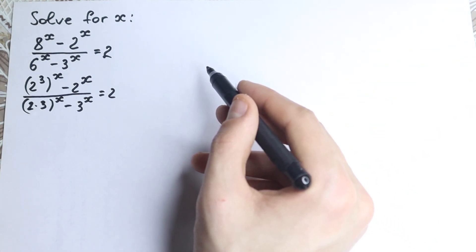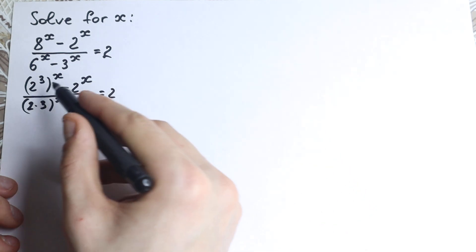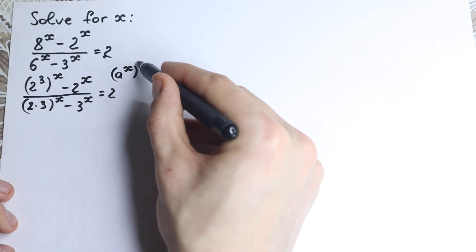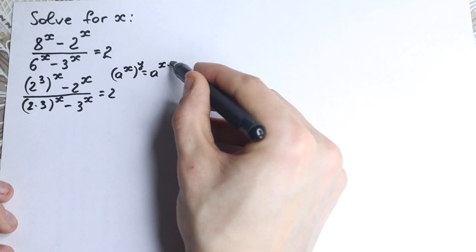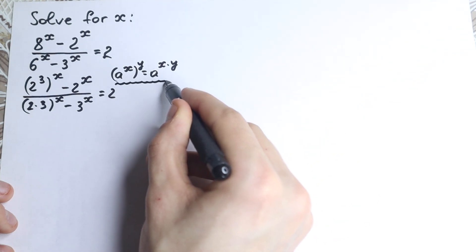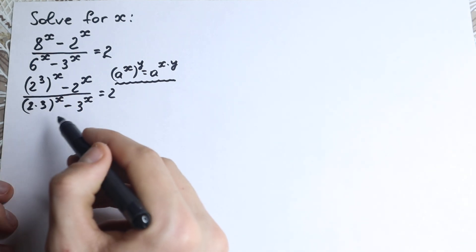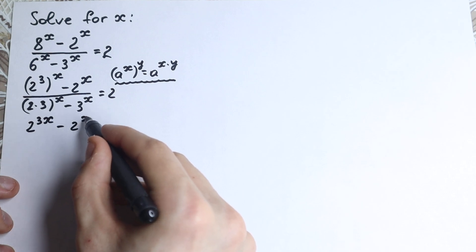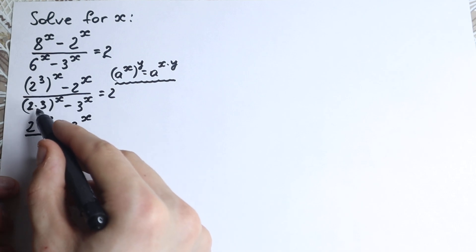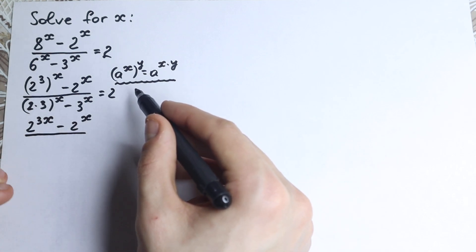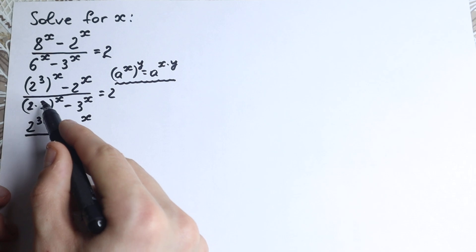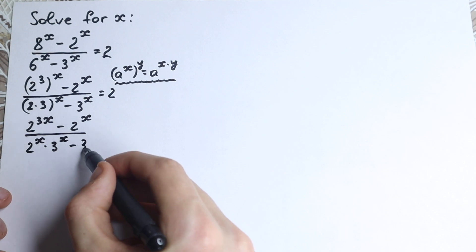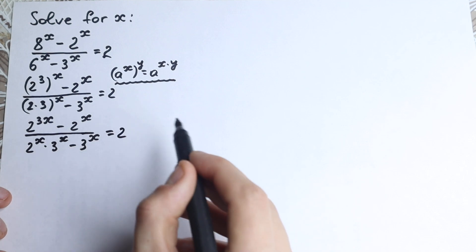Right now we need to know about a really important rule: a to the power x raised to the power y equals a to the power x times y. Using this rule, 2 cubed to the power x becomes 2 to the power 3x, minus 2 to the power x, all over 2 times 3 to the power x — which expands to 2 to the x times 3 to the x — minus 3 to the power x, equal to 2.